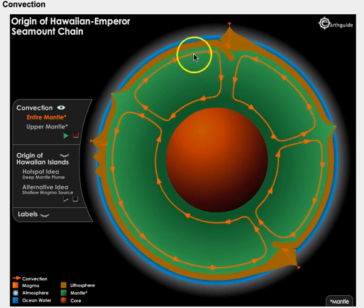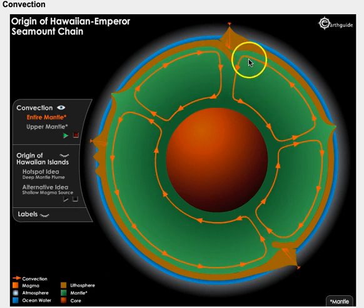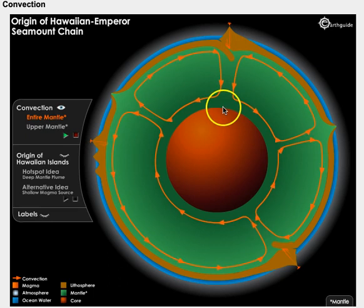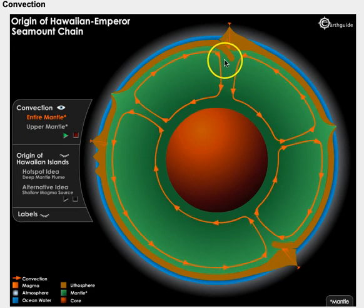When there are two convection current cells moving towards each other, the convection moves downwards because the magma is sinking towards the core. This is because the magma has already cooled down and becomes denser.